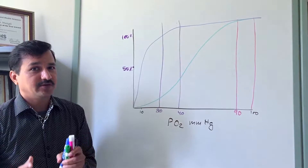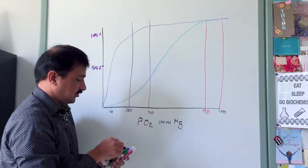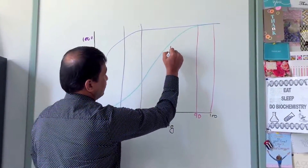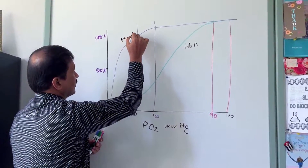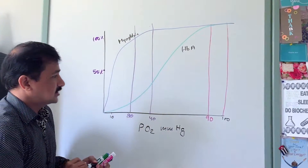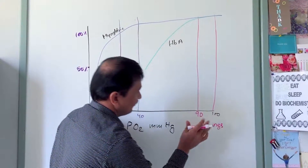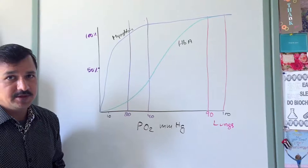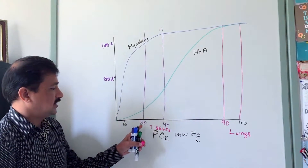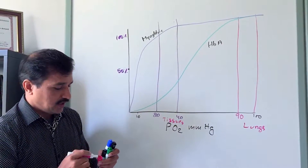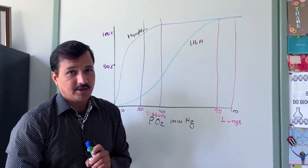The hemoglobin curve shown here is for adult hemoglobin HbA, and the hyperbolic curve is for myoglobin. In the lungs, partial pressure of oxygen is 90 to 100 millimeters of Hg, while in peripheral tissues it is 20 to 40 millimeters of Hg.